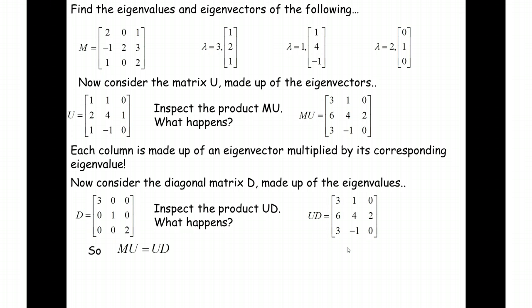So our matrix that we started with, multiplied by the matrix of eigenvectors is equal to our eigenvectors, multiplied by our diagonal matrix. If I wanted to rearrange this, so it's in terms of, so I've got my original matrix as a subject,